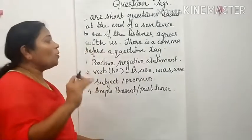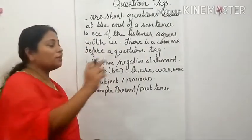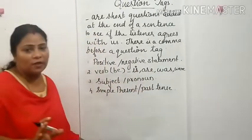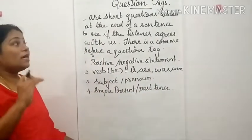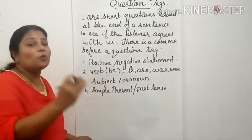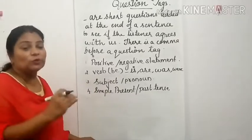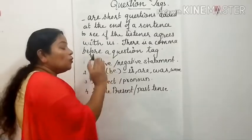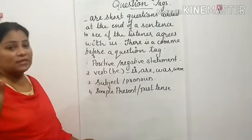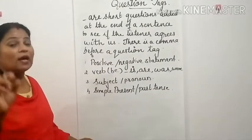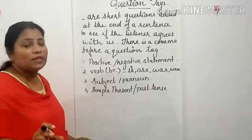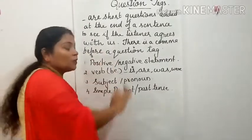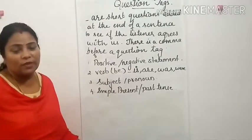There is a comma before a question tag. Now to understand how to make question tags, you should know some things. You have to know whether the given sentence is a positive statement or a negative statement.